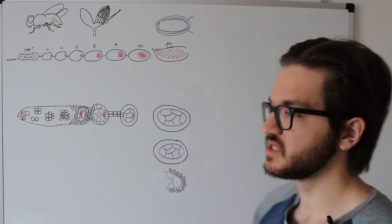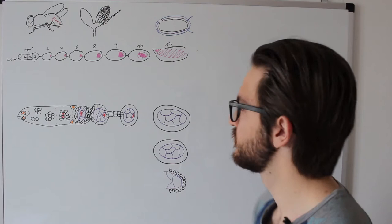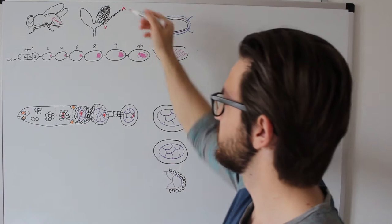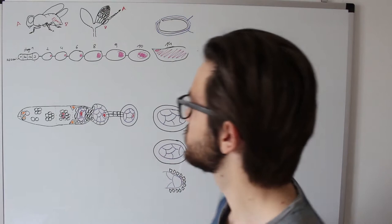The long axis has two very significant ends that are important spatially as well as temporally. So here we would have anterior and here we would have posterior. And if you imagine now turning these two ovaries just like I drew it here in red, then you would see that this axis refers to the axis of the Drosophila body, anterior and posterior.